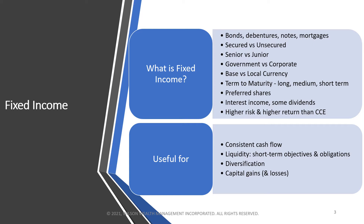Fixed income can be divided into secured versus unsecured. Secured is where there's a specific claim against an asset — maybe a warehouse or property. If the company doesn't make repayment, secured credit holders have a claim against that specific asset. Unsecured creditors get in line with everyone else. Similarly with senior versus junior: seniors move to the front of the line in insolvency or receivership, while juniors have to queue up with everyone else.